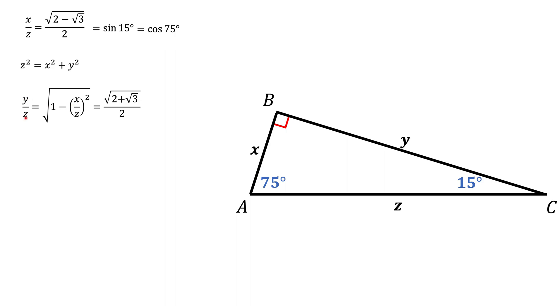When it comes to y over z, things change. Whatever was adjacent leg become opposite leg. Whatever was opposite leg become adjacent leg. So sine and cosine here are going to switch. And we get cosine of 15 degrees and sine of 75 degrees.